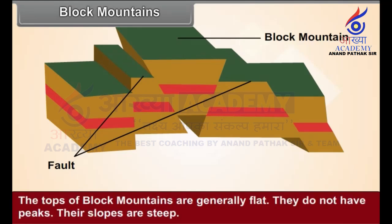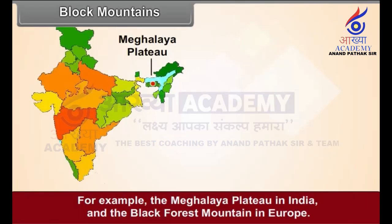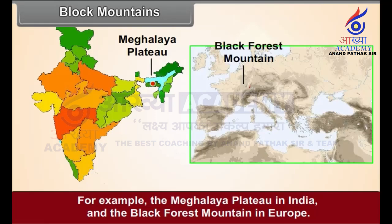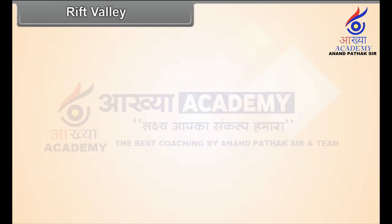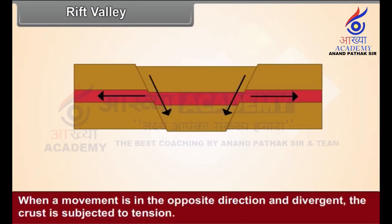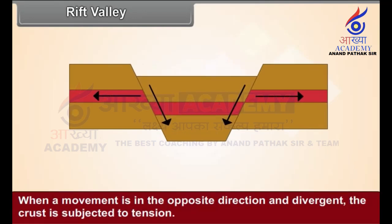See figure 5.4. The tops of block mountains are generally flat. They do not have peaks. Their slopes are steep. For example, the Meghalaya Plateau in India and the Black Forest Mountain in Europe.